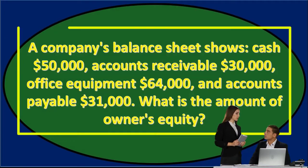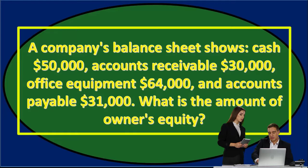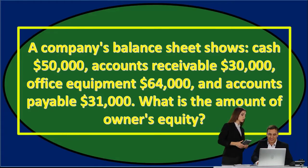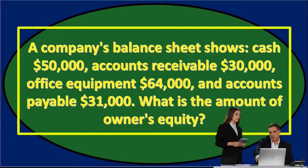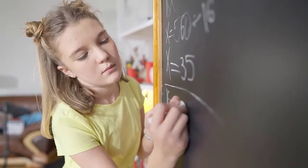First question: a company's balance sheet shows cash of $50,000, accounts receivable of $30,000, office equipment of $64,000, and accounts payable of $31,000. What is the amount of the owner's capital? We're going to have to break these down into our accounting equation.